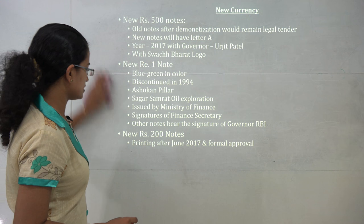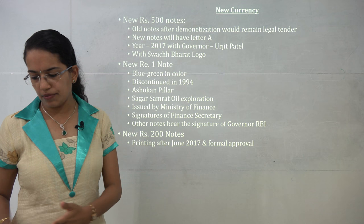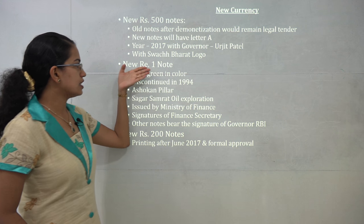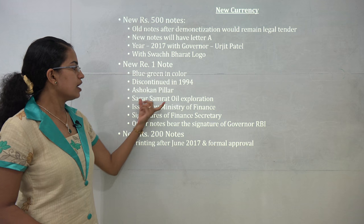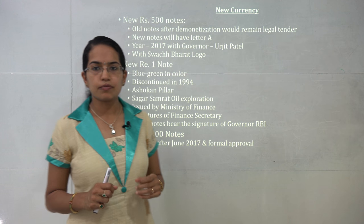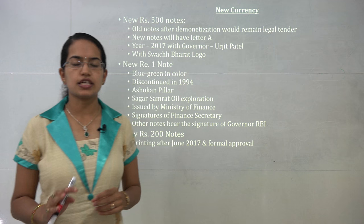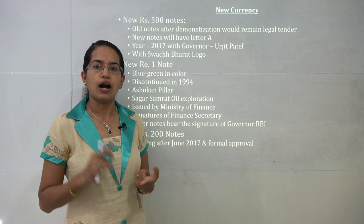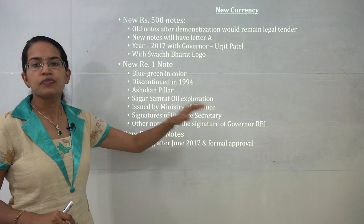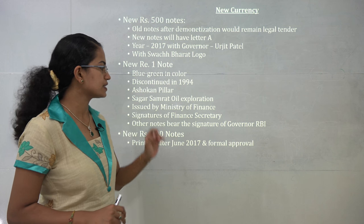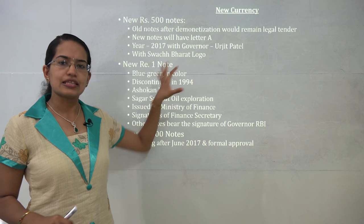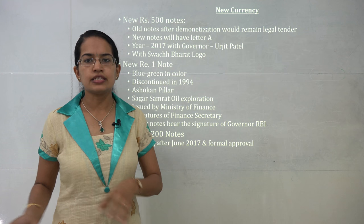Some of the new currencies released: a 1 rupee new note has come up that is bluish-green in colour. These were discontinued in 1994. The new note would have the sign of the Ashokan pillar and the Sagar Samrat oil exploration rig. Importantly, all currency notes in circulation are published by RBI, but the 1 rupee note and 1 rupee coin are exceptions — done by the Ministry of Finance. They do not carry the signature of the RBI governor, but rather the finance secretary. This is especially important in the context of the recent demonetization drive.